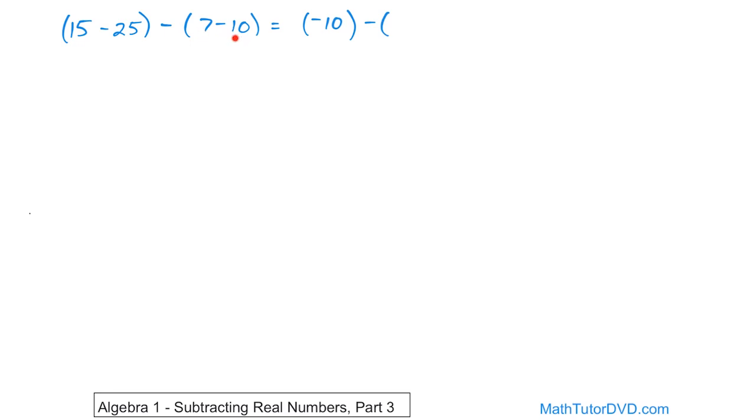So even though it's 7 minus 10, that's a little bit weird, we're going to do the subtraction with the larger number first. So 10 minus 7 is going to give me a 3, and the sign is going to go with the larger absolute value. This is a positive 7, this is really a negative 10 here. So you're adding 7 plus a negative 10, and so the negative of the 10 is going to stick with the answer.